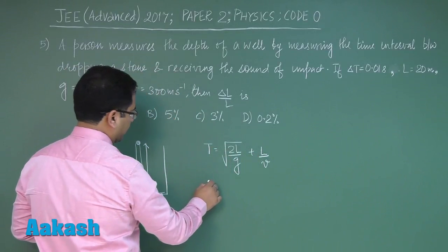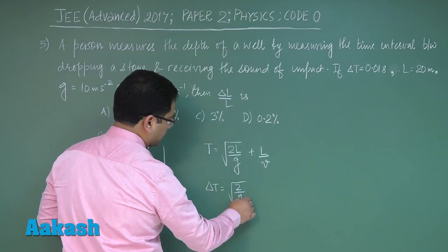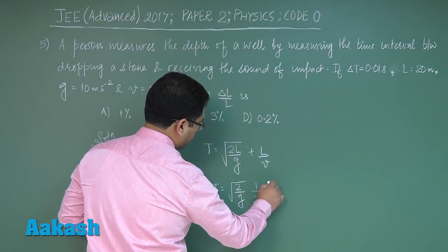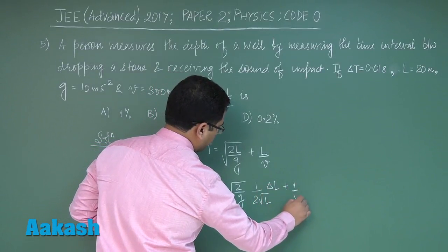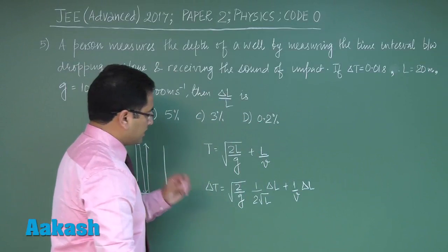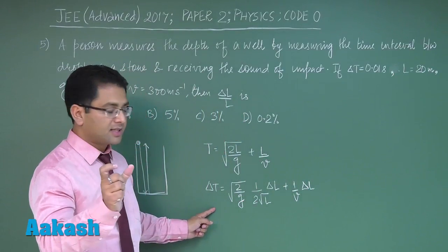Now straightforward derivative: ΔT = √(2/g) × (1/2√L) × ΔL + (1/V) × ΔL. In an easier situation, with this expression we could calculate ΔL/L in one step, but that would be an ideal situation.